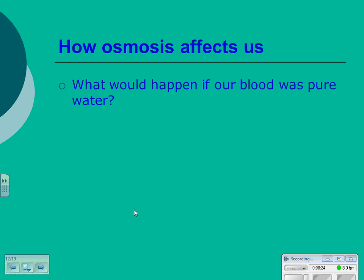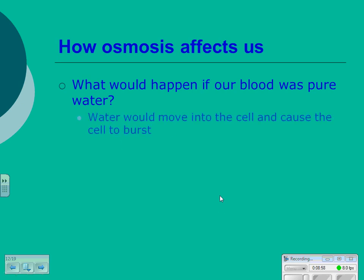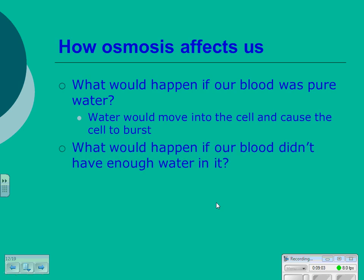What would happen if our blood was pure water? All of our cells would have high concentrations of water outside them. The red blood cells and white blood cells would gain water trying to balance that high concentration outside, causing them to swell and potentially burst. What if our blood didn't have enough water — kind of thick? This happens when you get dehydrated, and it is why dehydration is such a serious thing. All of the fluid inside your cell tries to leave, causing the cell to shrivel and shrink until it can no longer function, and the cell could die.